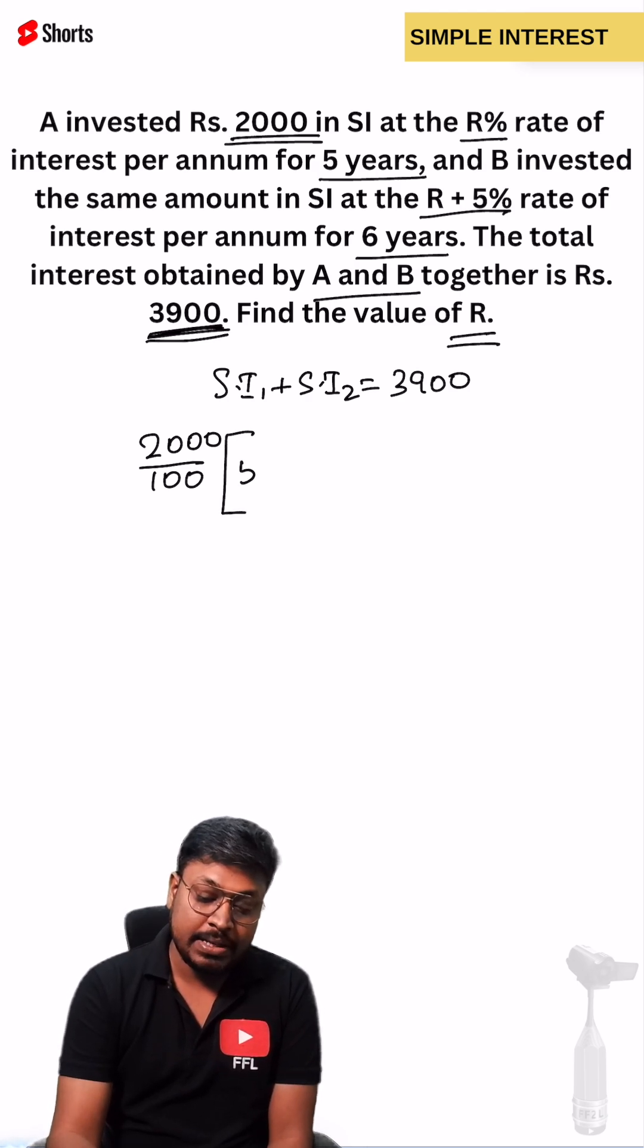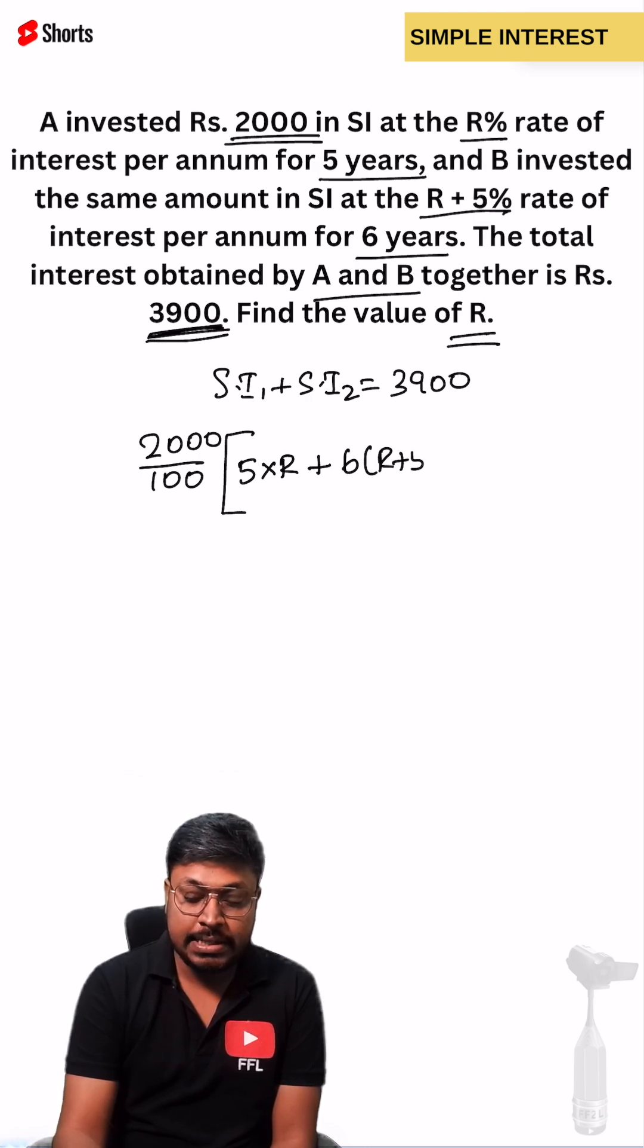Number of years for A is 5, rate of interest is R. Number of years for B is 6, rate of interest is R plus 5.